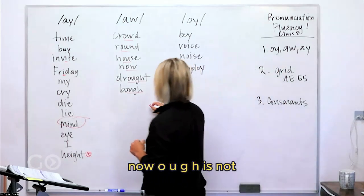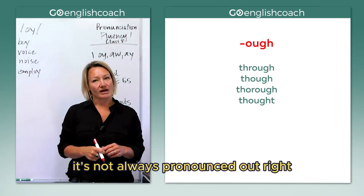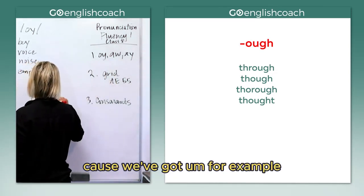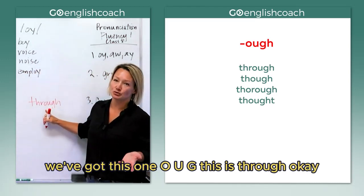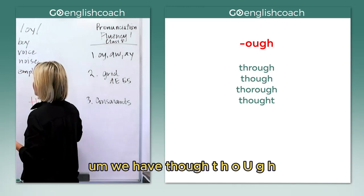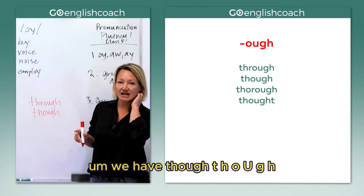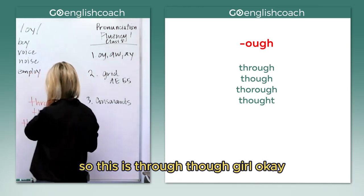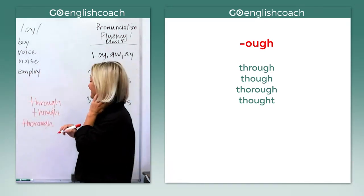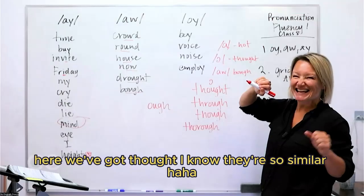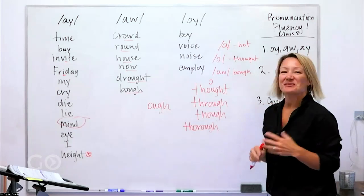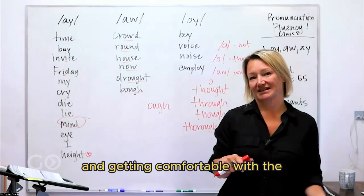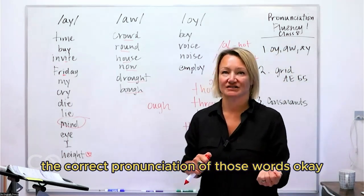Now, O-U-G-H is not always pronounced 'ow,' right? Because we've got, for example, T-H-R-O-U-G-H — this is 'through.' We have 'though,' T-H-O-U-G-H, and 'thorough.' And here we've got 'thought.' I know they're so similar. The best way to handle this is just really to practice with the sounds and the words, getting comfortable with the correct pronunciations of those words.